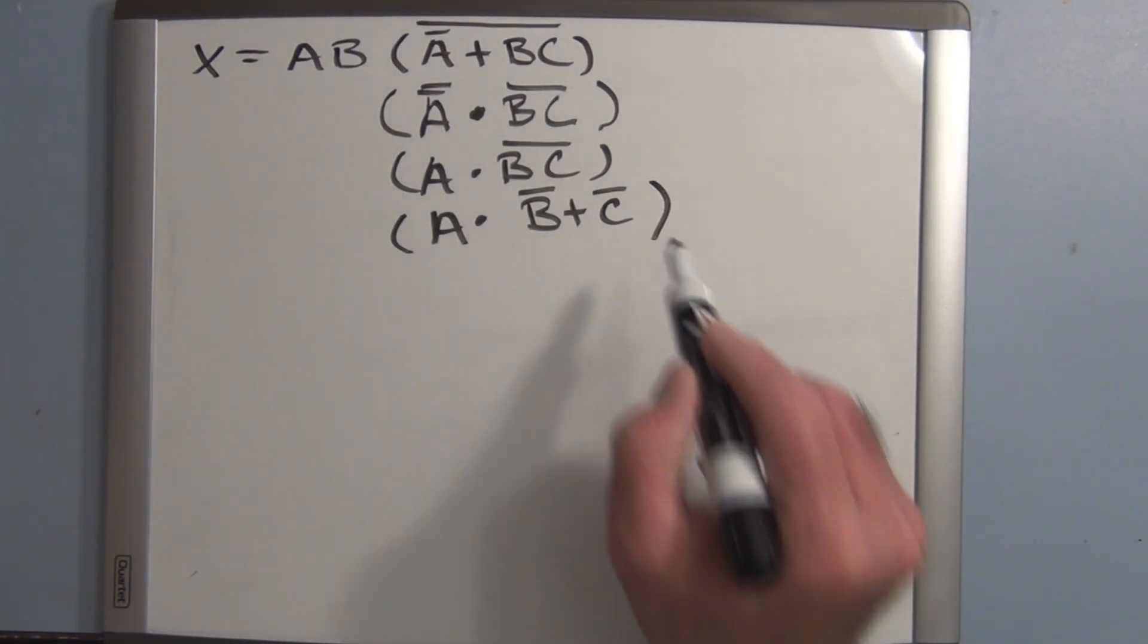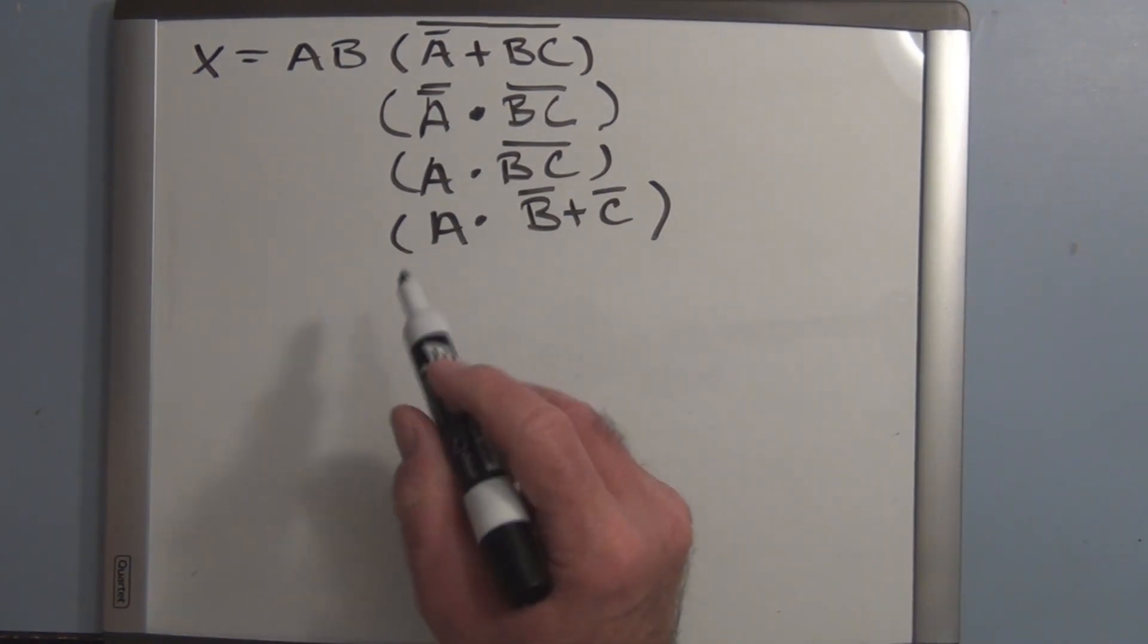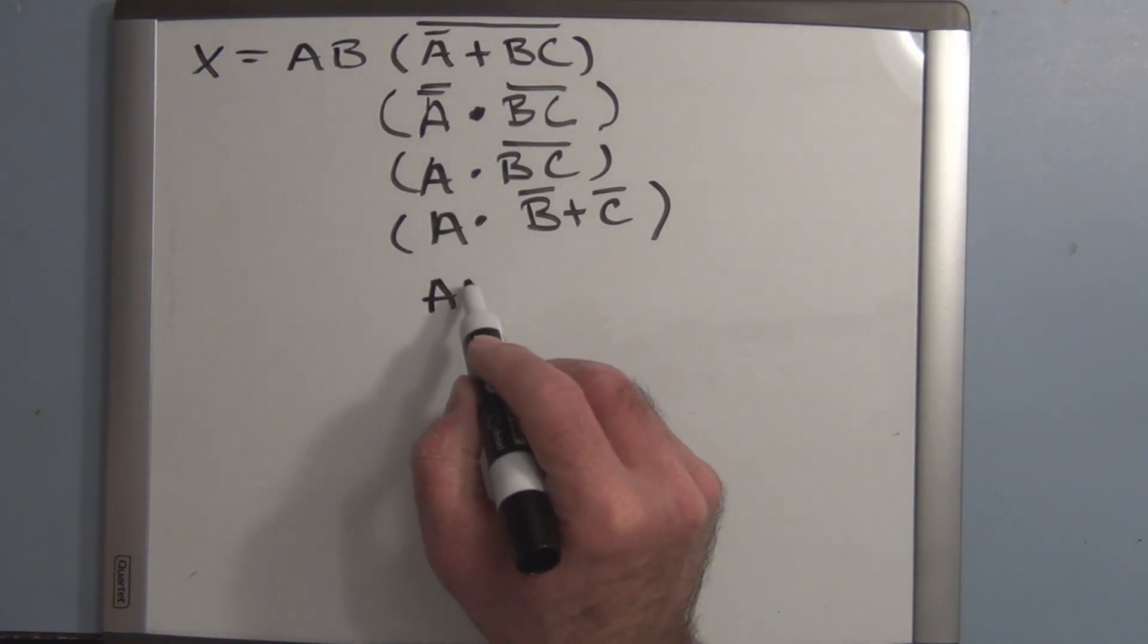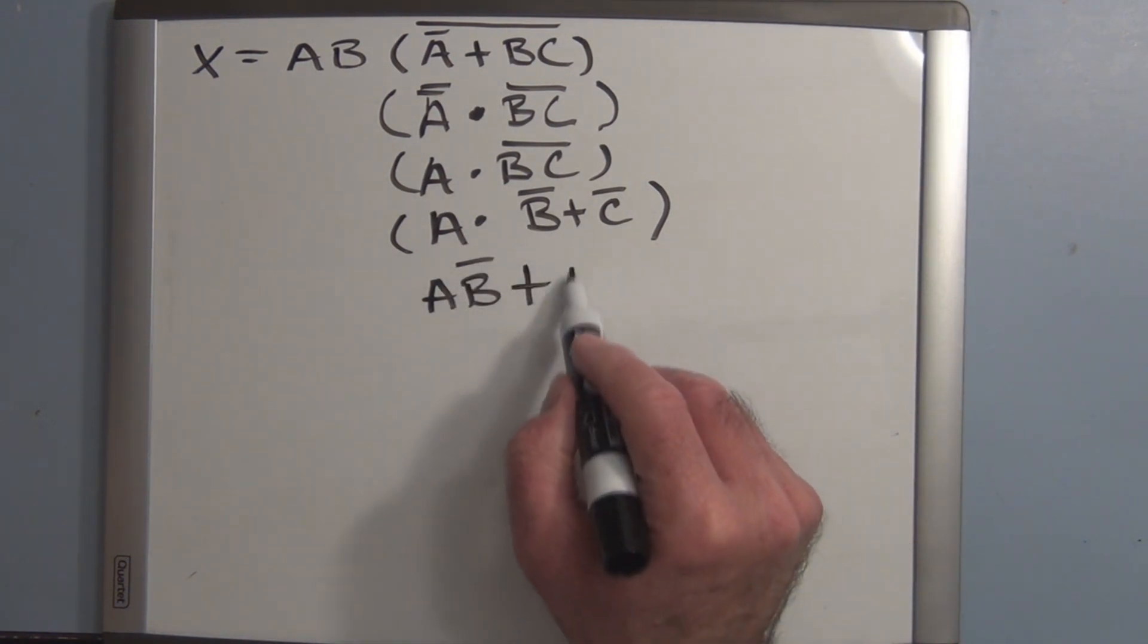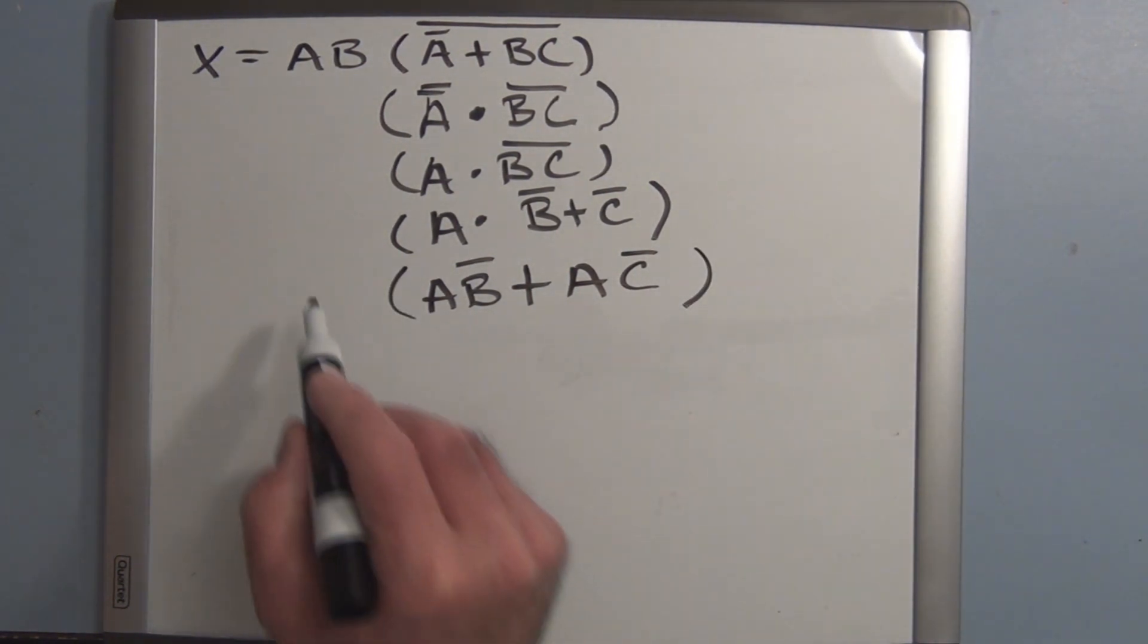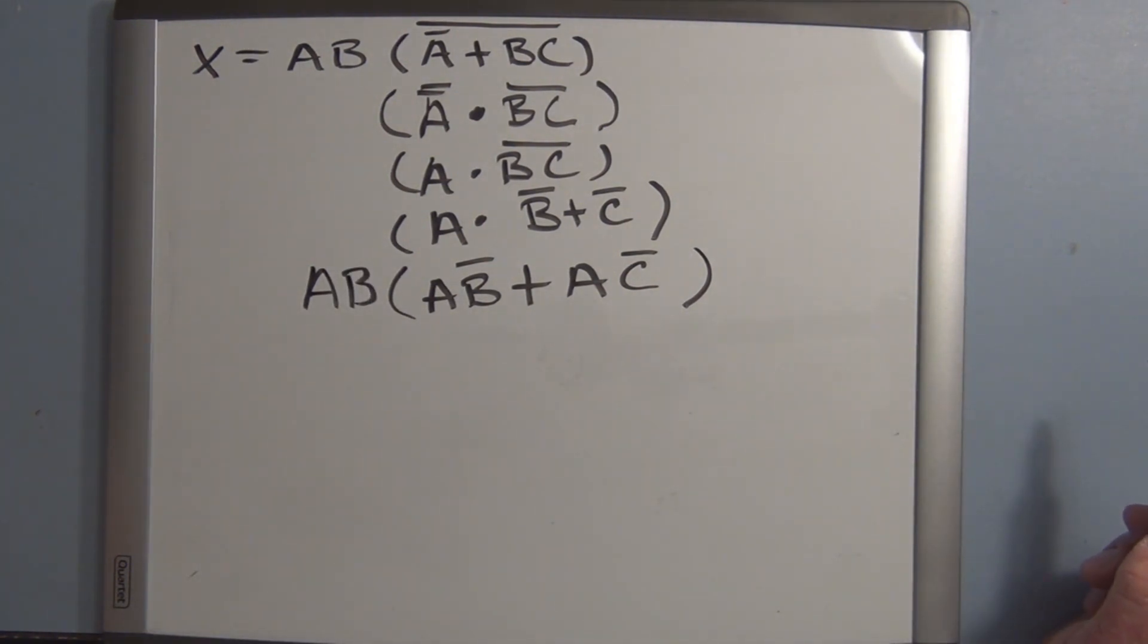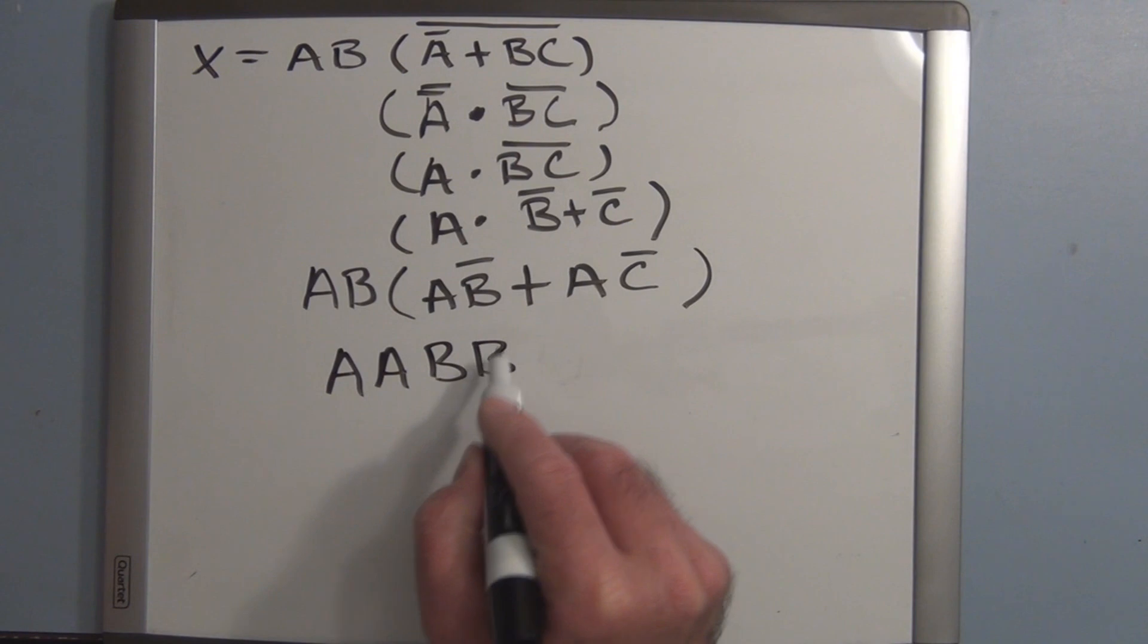And so what we can do now is we can distribute A. So what we'll end up with is AB not or together with AC not. And we still have the parentheses here. And let's bring down these elements here. So now we can use the distributive rule, a distributive theorem. And so this becomes AA and BB not.